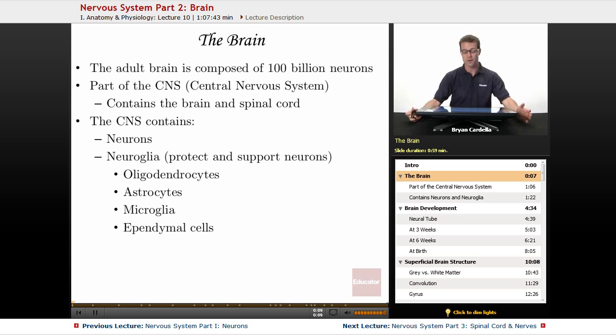The adult brain is composed of 100 billion neurons, which is amazing to think about. That's a lot of cells.